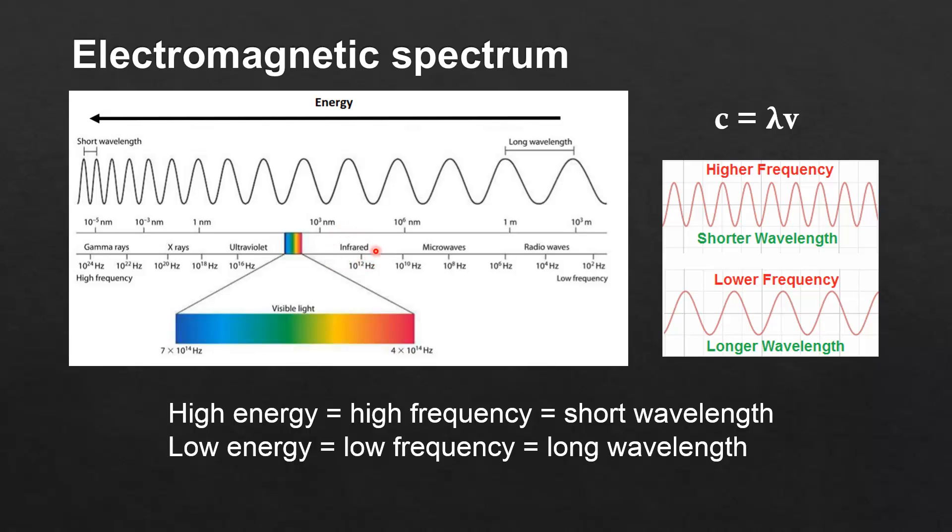And we can also compare infrared with ultraviolet. Infrared is lower energy, ultraviolet is higher energy. Infrared has a lower frequency and a longer wavelength. Ultraviolet has a higher frequency and shorter wavelength.